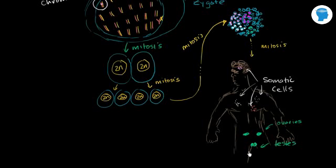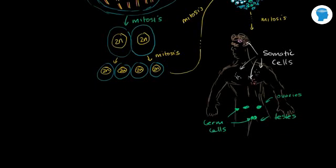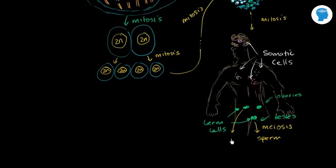The germ cells in the gonads — the cells that have differentiated into being part of the testes and ovaries — those germ cells, differentiated from somatic cells, through the process of meiosis can produce the gametes. If you're female, they're going to produce eggs. If you're male, through the process of meiosis, you're going to produce sperm. And in the case of a female, you're going to produce ova.